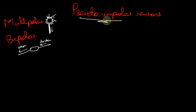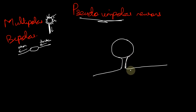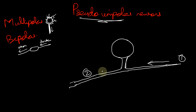Now, what is a pseudo-unipolar neuron? A pseudo-unipolar neuron is a cell body with a single process. That process divides into two soon after its origin from the cell body — one of them is peripheral, called the peripheral process, and the other is called the central process because it goes towards the CNS, while the peripheral process goes towards the periphery. Process one carries the signal towards the cell body, and process two carries the signal away from the cell body.